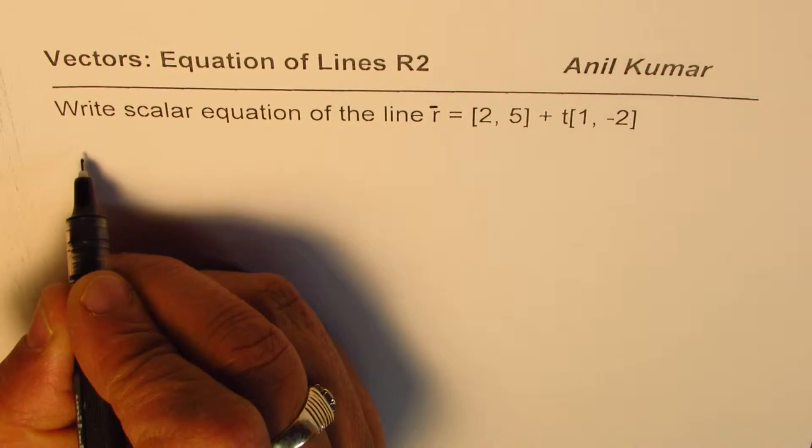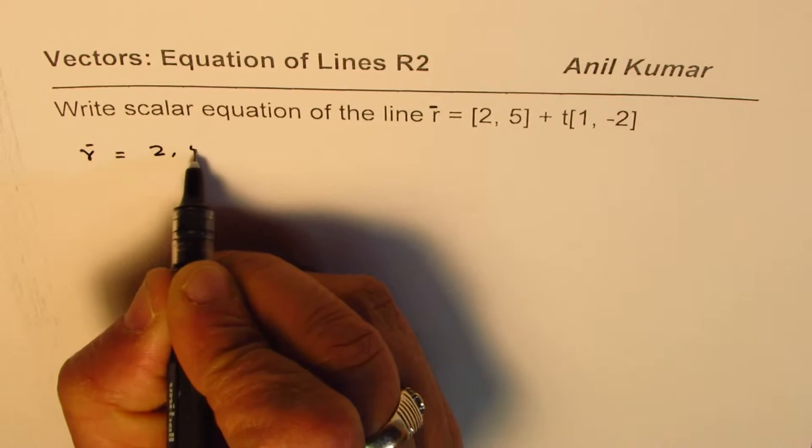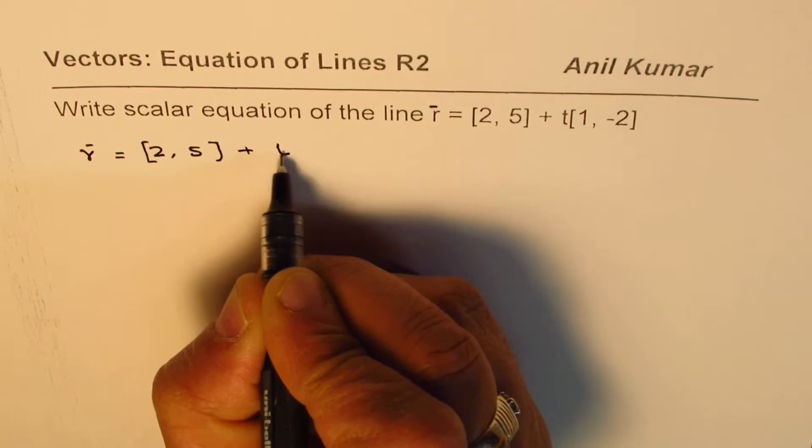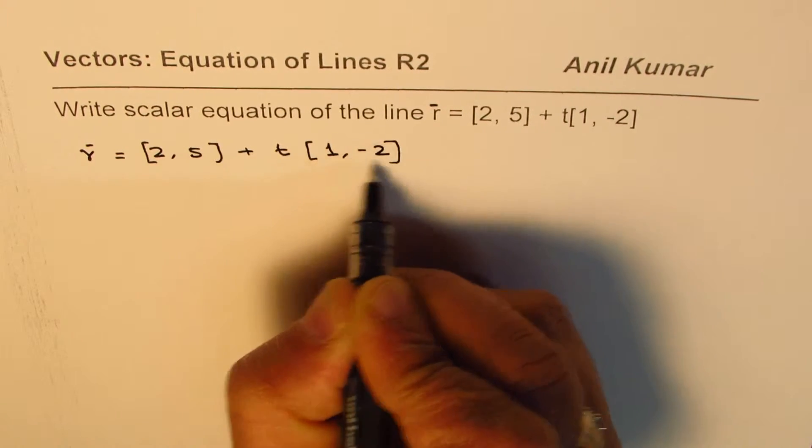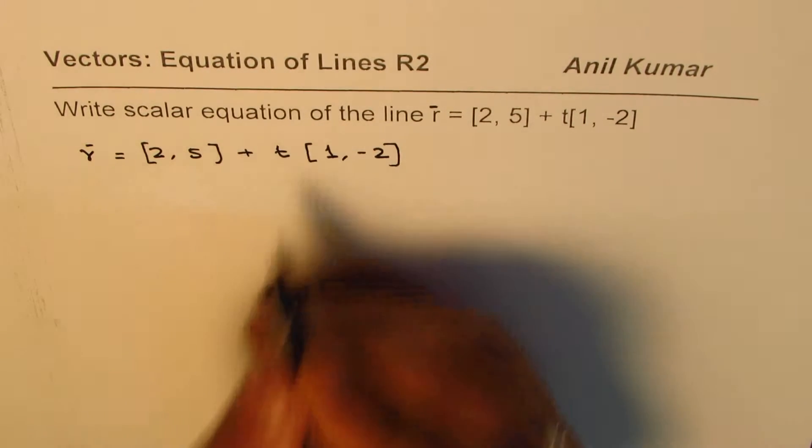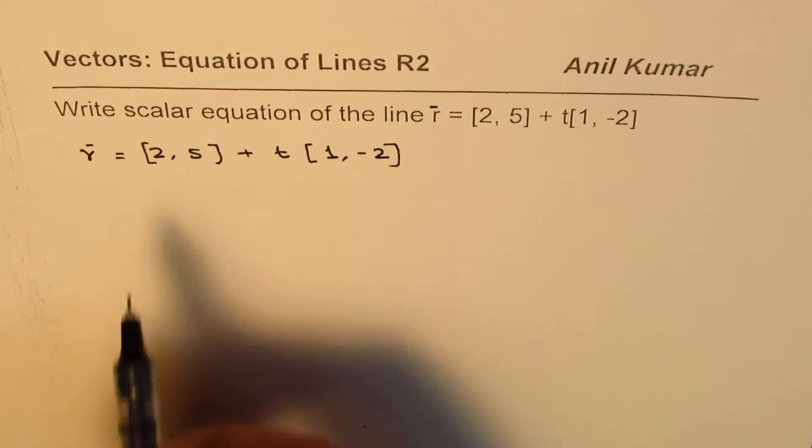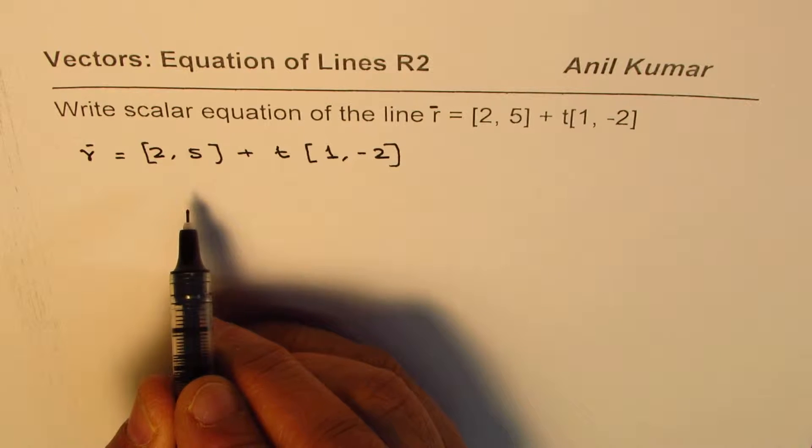Let's rewrite this equation. We are given r equals [2,5], that's the position vector, plus parameter t times direction vector [1,-2]. That is the vector equation. Now how do we convert this to scalar equation? We will go in two steps. From this equation we can write the parametric equation or we could also write symmetric equation.